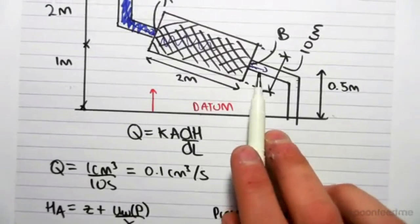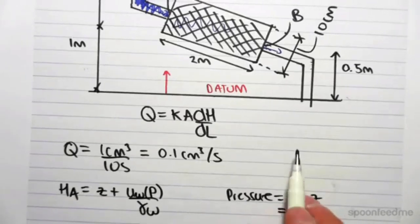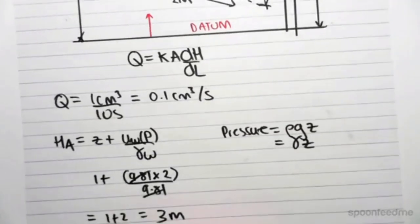So the head at B is z plus the pore water pressure on gamma w. As we just concluded, there's no pore water pressure because this is just dribbling out. So there's no buildup of pressure due to water. There's just an elevation of 0.5 m above our datum.